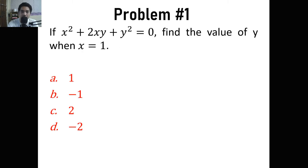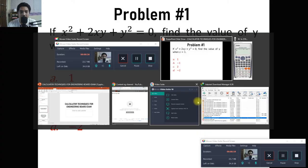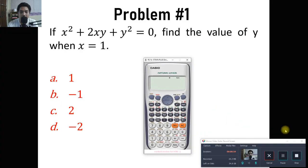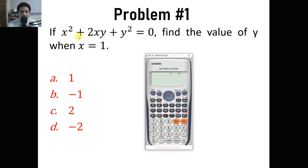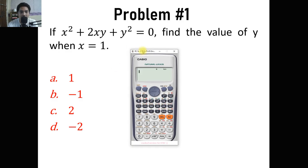Let's try number one. In problem number one, we have x squared plus 2xy plus y squared equals zero. We have two variables, x and y. It says find the value of y when x equals 1. In manual computation, we can simply substitute 1, then isolate y and get the value of y. But if we use the calculator, here's what we do.